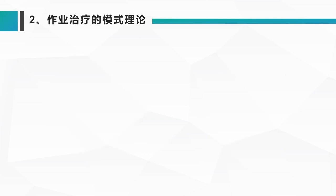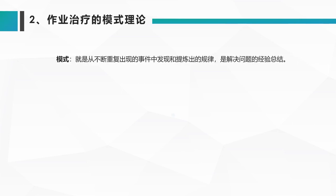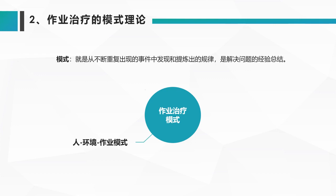作业治疗的模式理论。作业治疗模式是在不断重复出现的事件中发现和提炼出一些规律，来解决功能实践的一种方法。根据其作业治疗模式，分为四种：第一种是作业表现模式；第二种是人类作业模式；第三种是人和环境作业模式；第四种是康复模式。